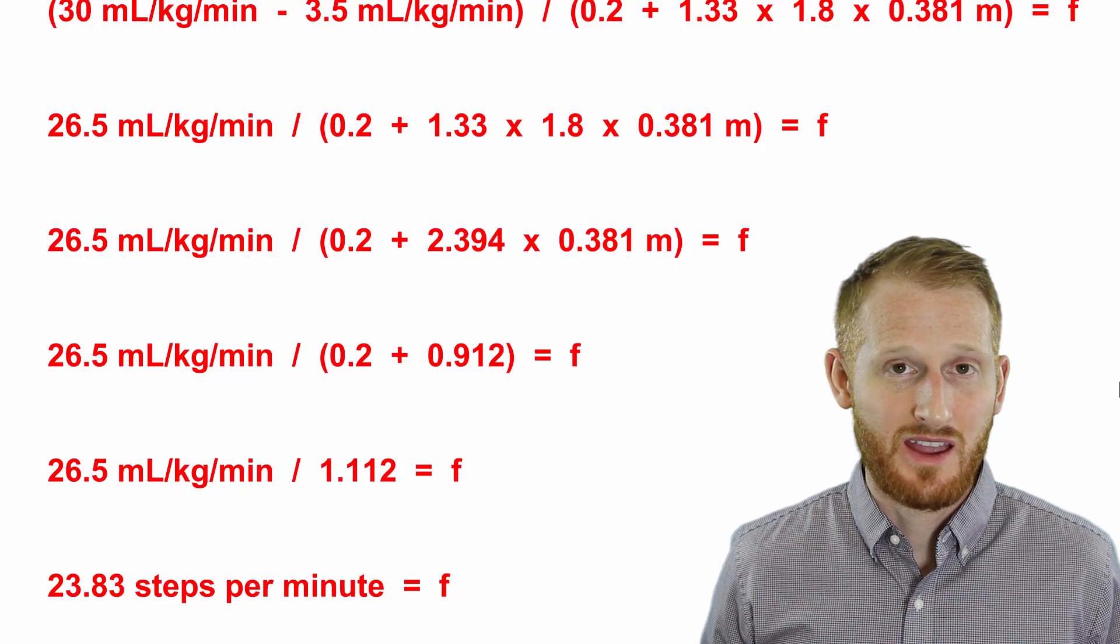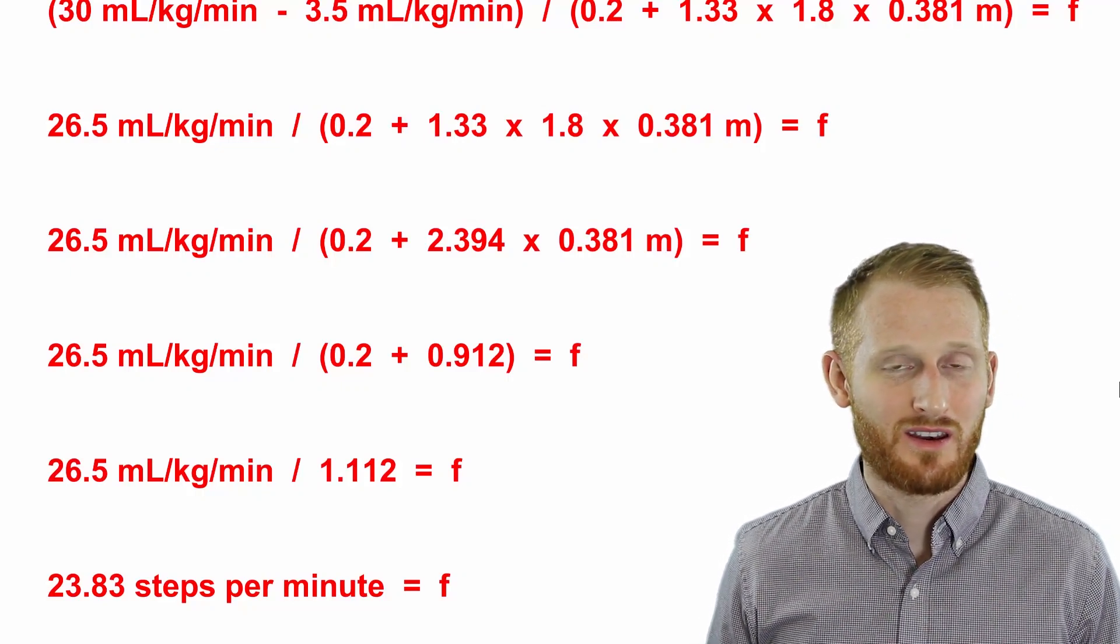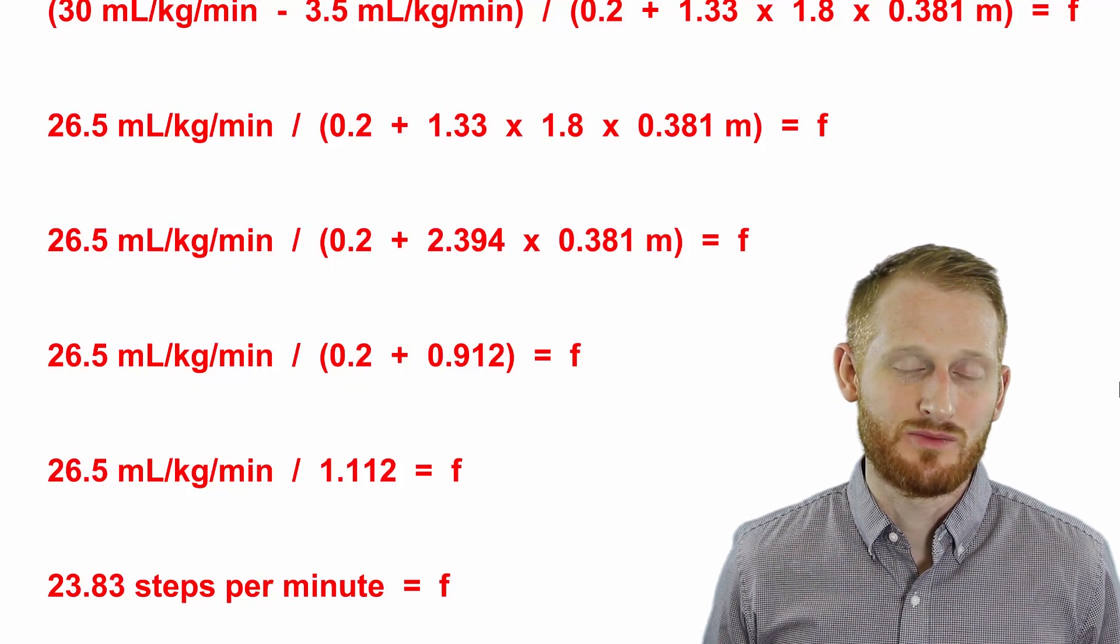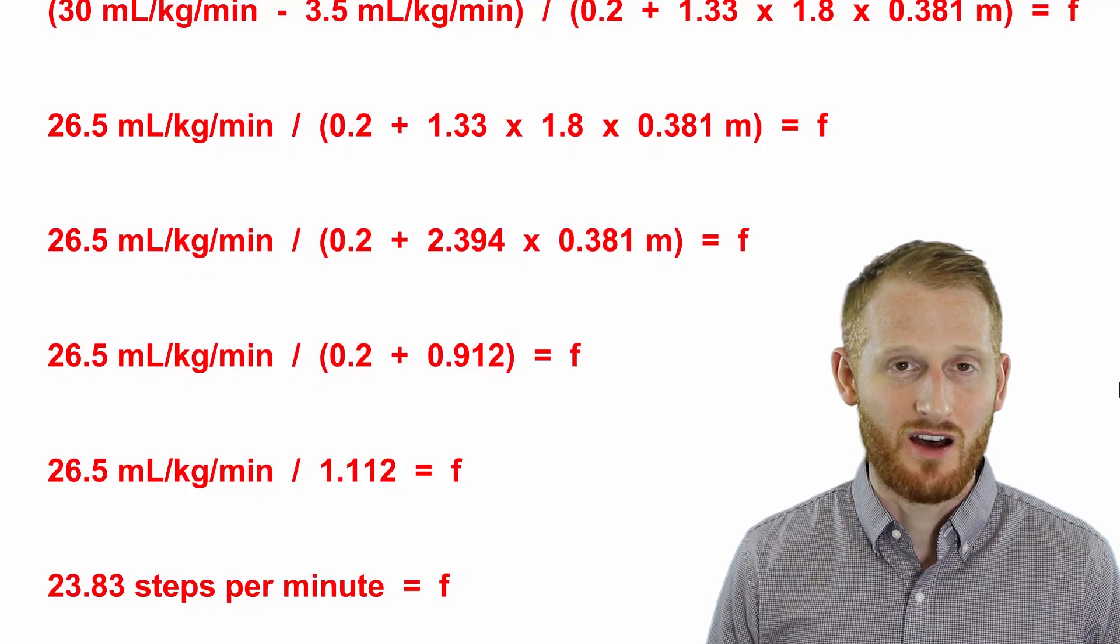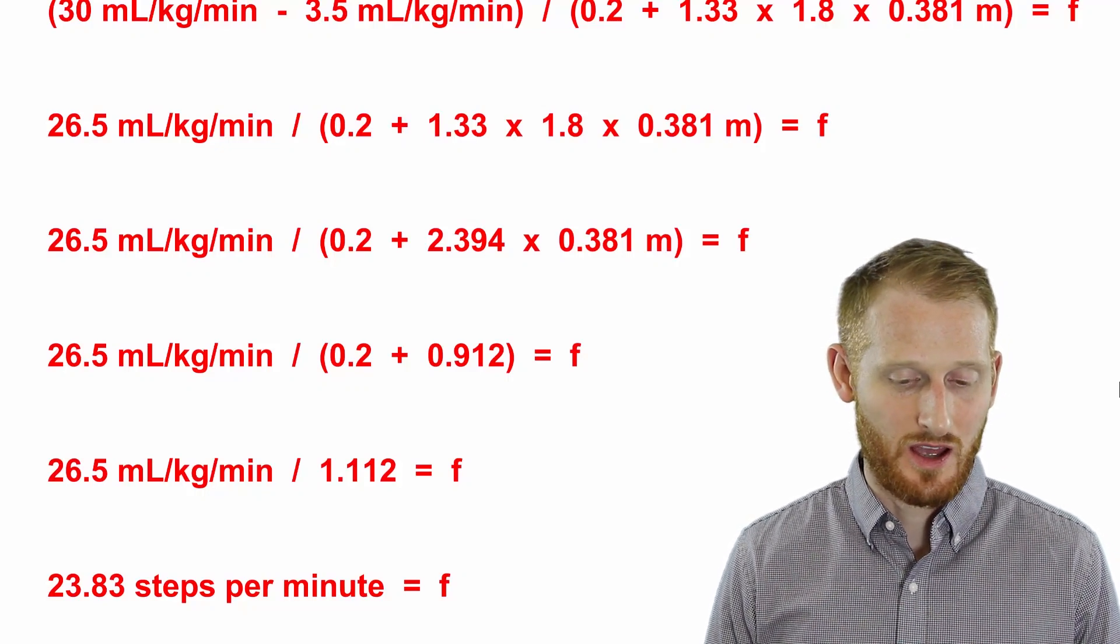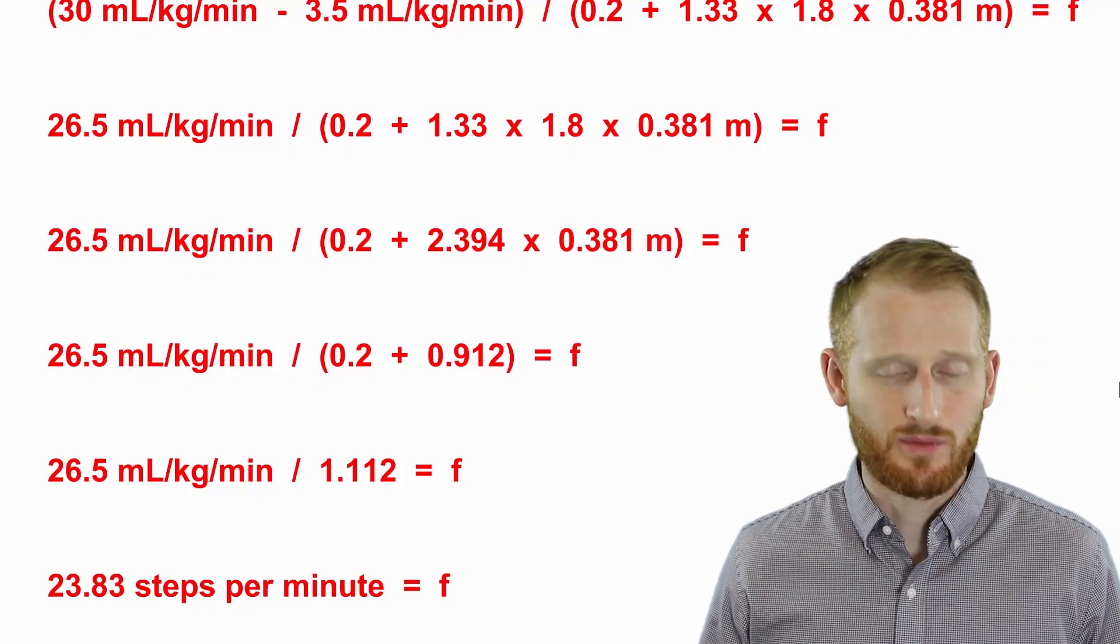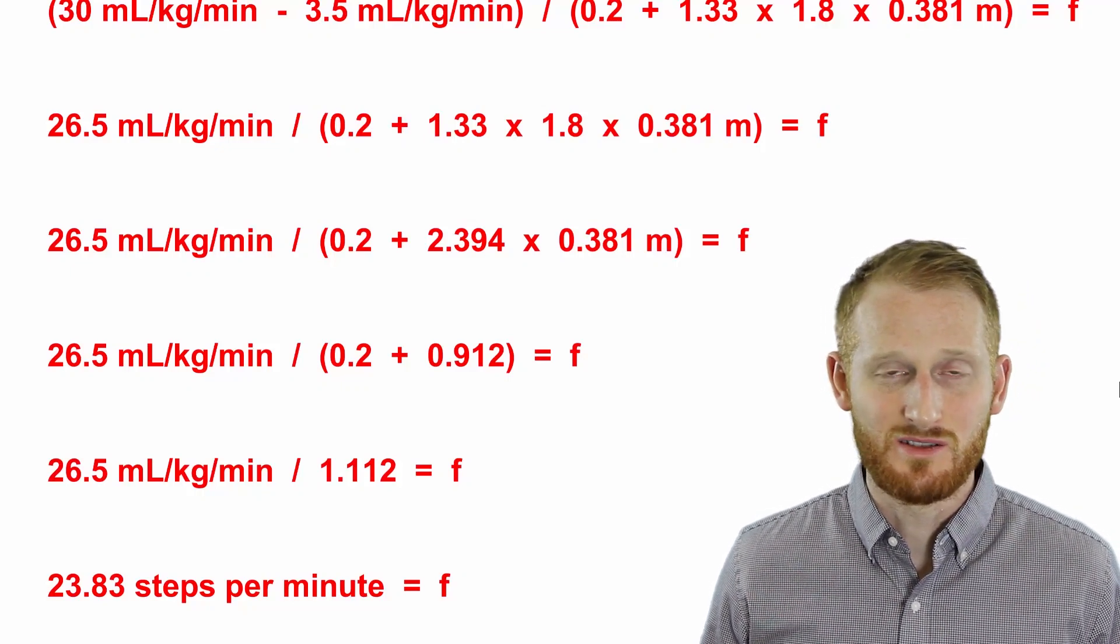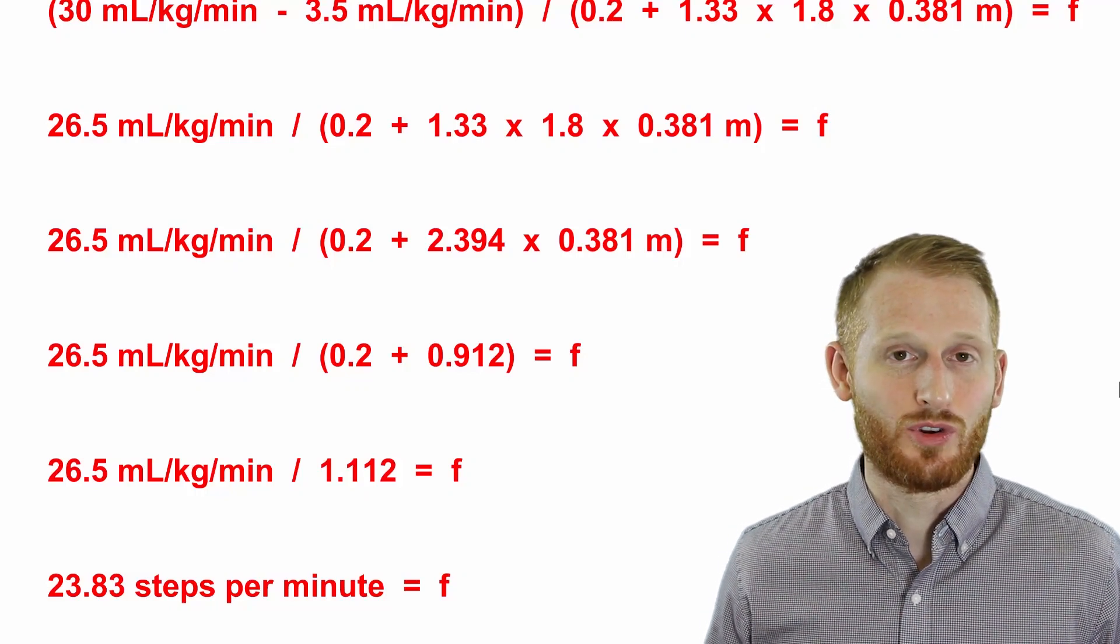So now that we're at the very end here, we're going to round the 23.83 to 24. We didn't want to round in any of the previous steps because we didn't want to have compounding rounding errors affecting our final results. So always keep your decimals until the last step. But 24 steps per minute is what we need to prescribe here in order to get the exercise intensity that we're looking for.